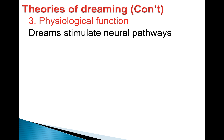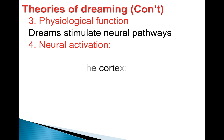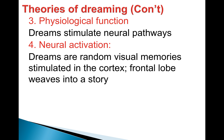The third theory is physiological function — dreams simply stimulate neural pathways and keep them active during the night. It's a straightforward biological view. The fourth, neural activation theory, suggests that dreams result when lower brain centers send random signals to the cortex, and the cortex tries to weave all this random information into a coherent dream. This explains those odd dreams where people from different parts of your life are sitting around a table together — you'll usually forget them unless interrupted by an alarm clock.